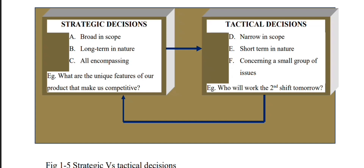A strategic decision example: what are the unique features of our products — focusing on competitive product features. A tactical decision example: who will work the second shift tomorrow — addressing day-to-day activities. We have covered operation management decisions, strategy decisions, and tactical decisions in this video.